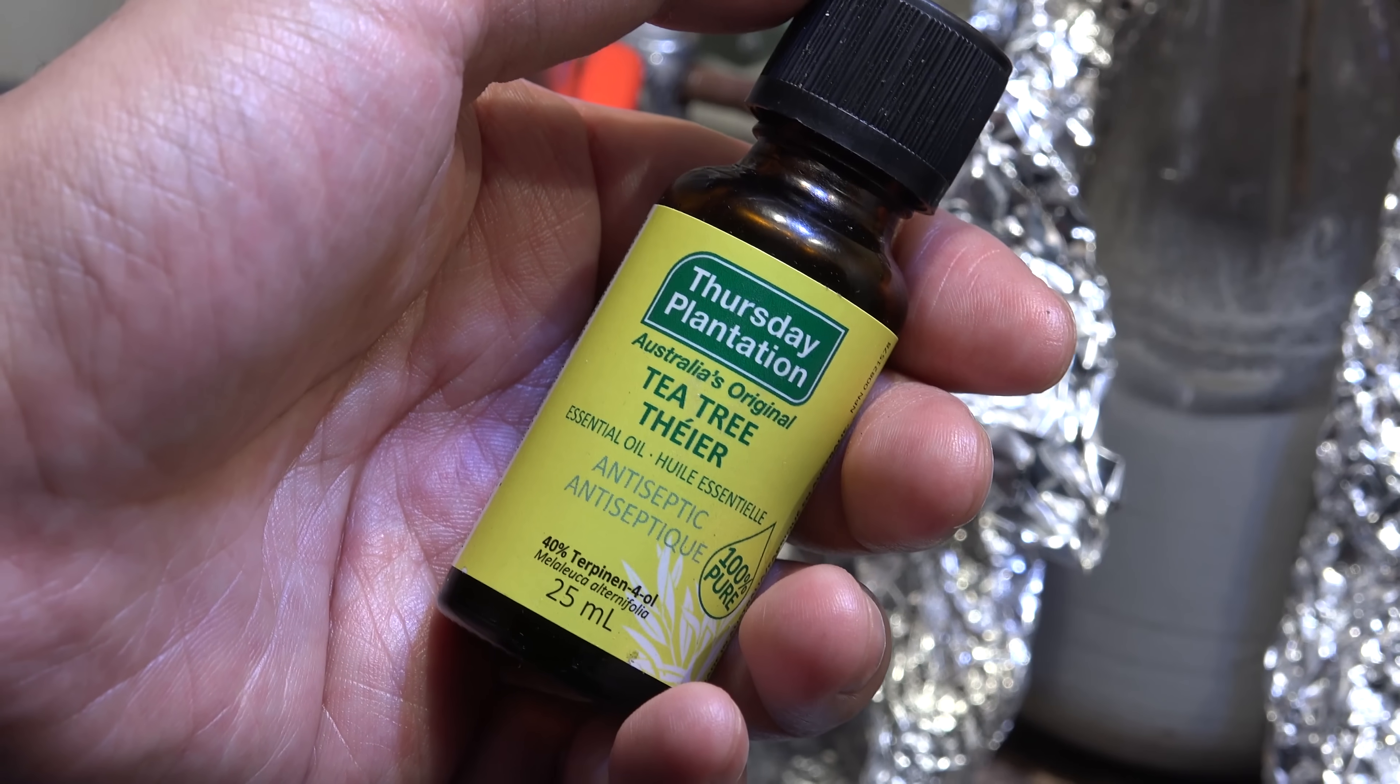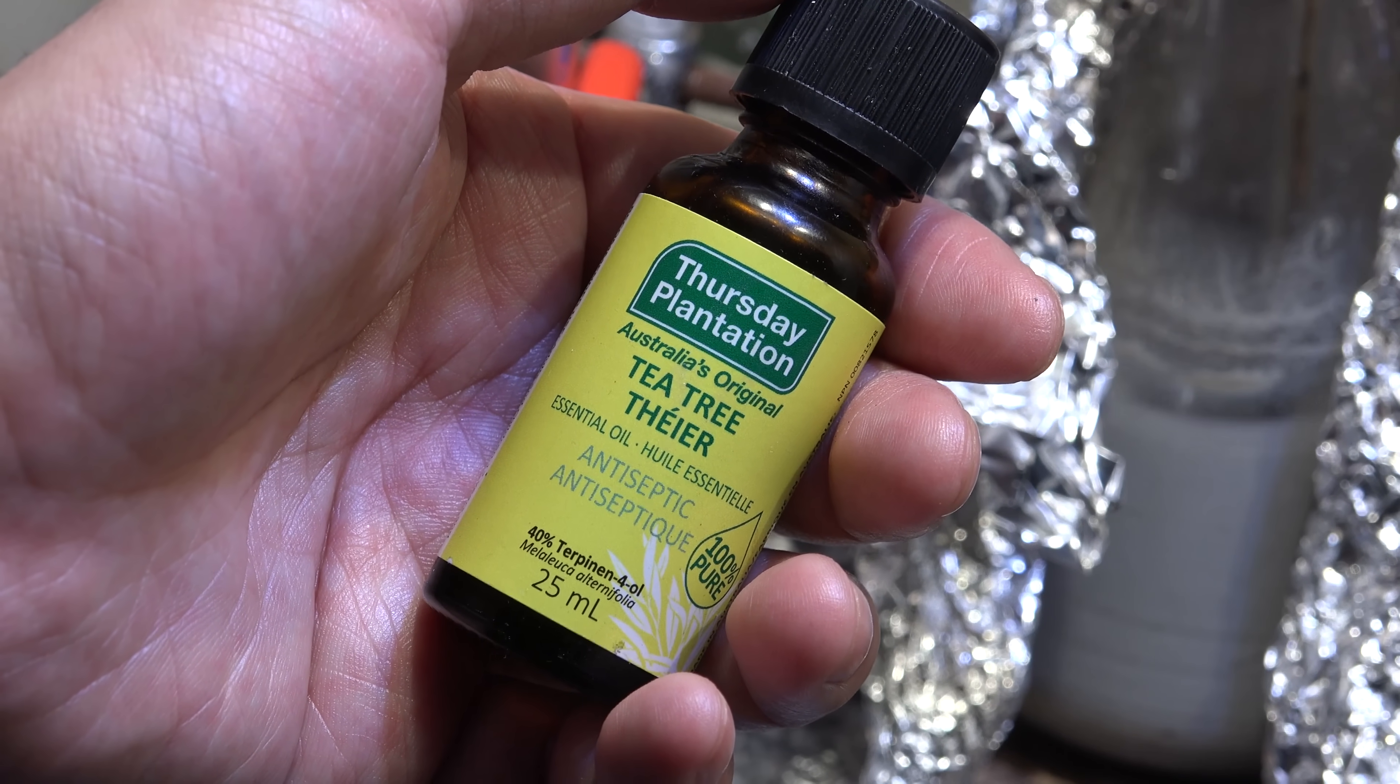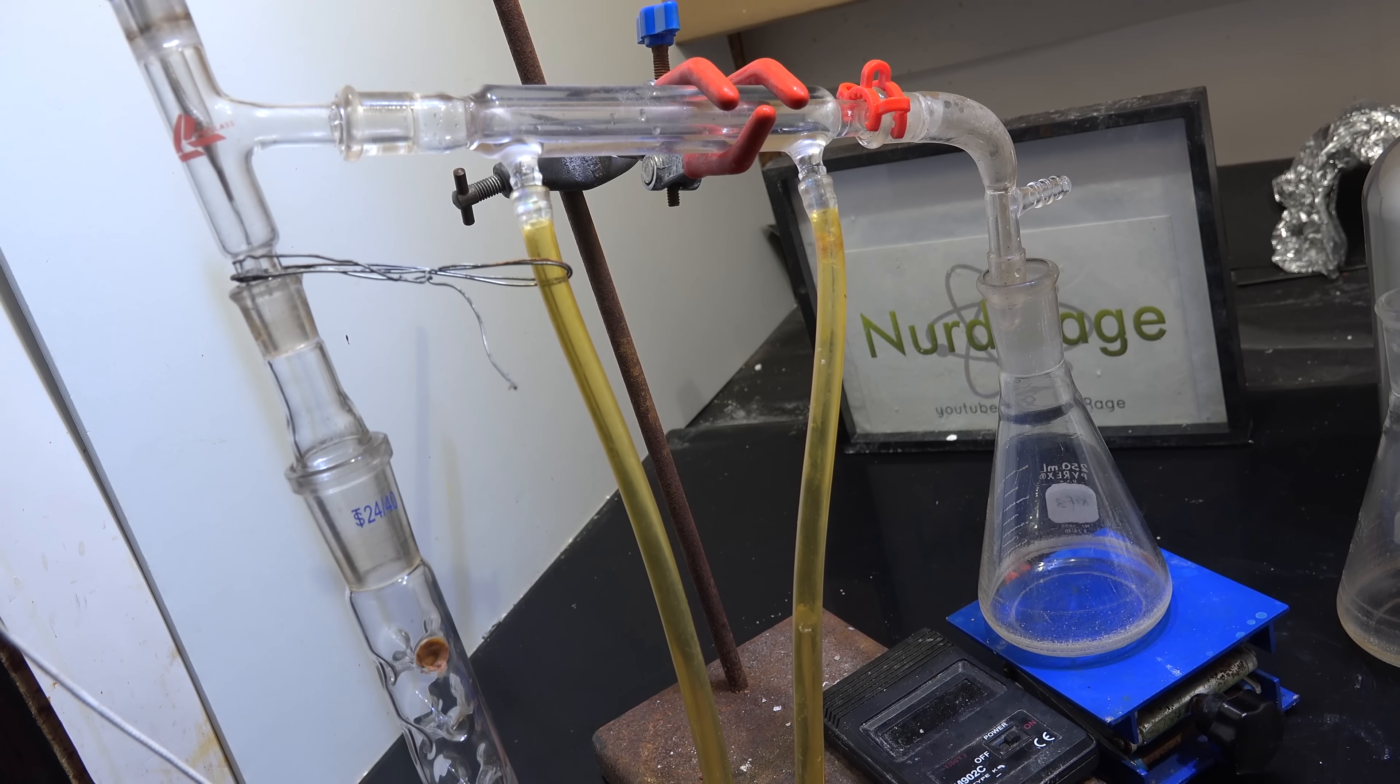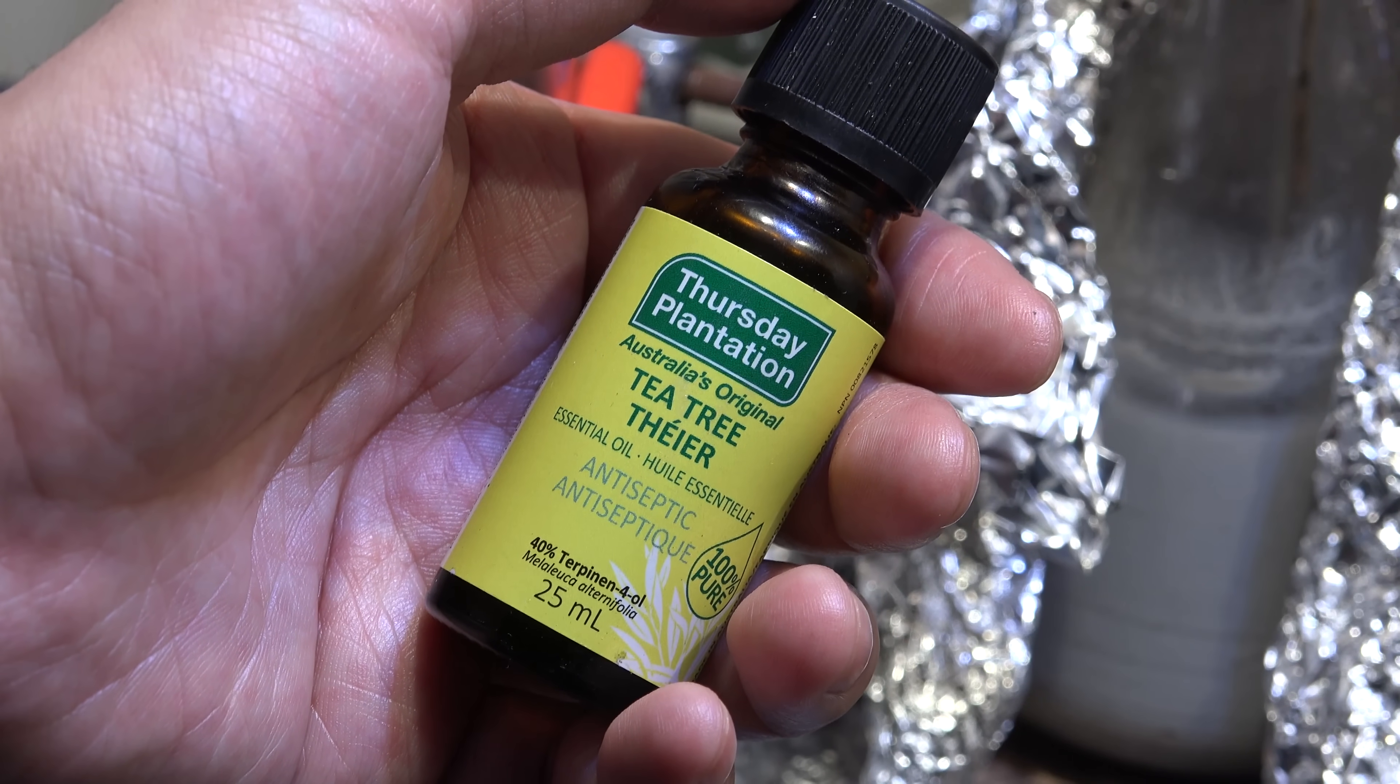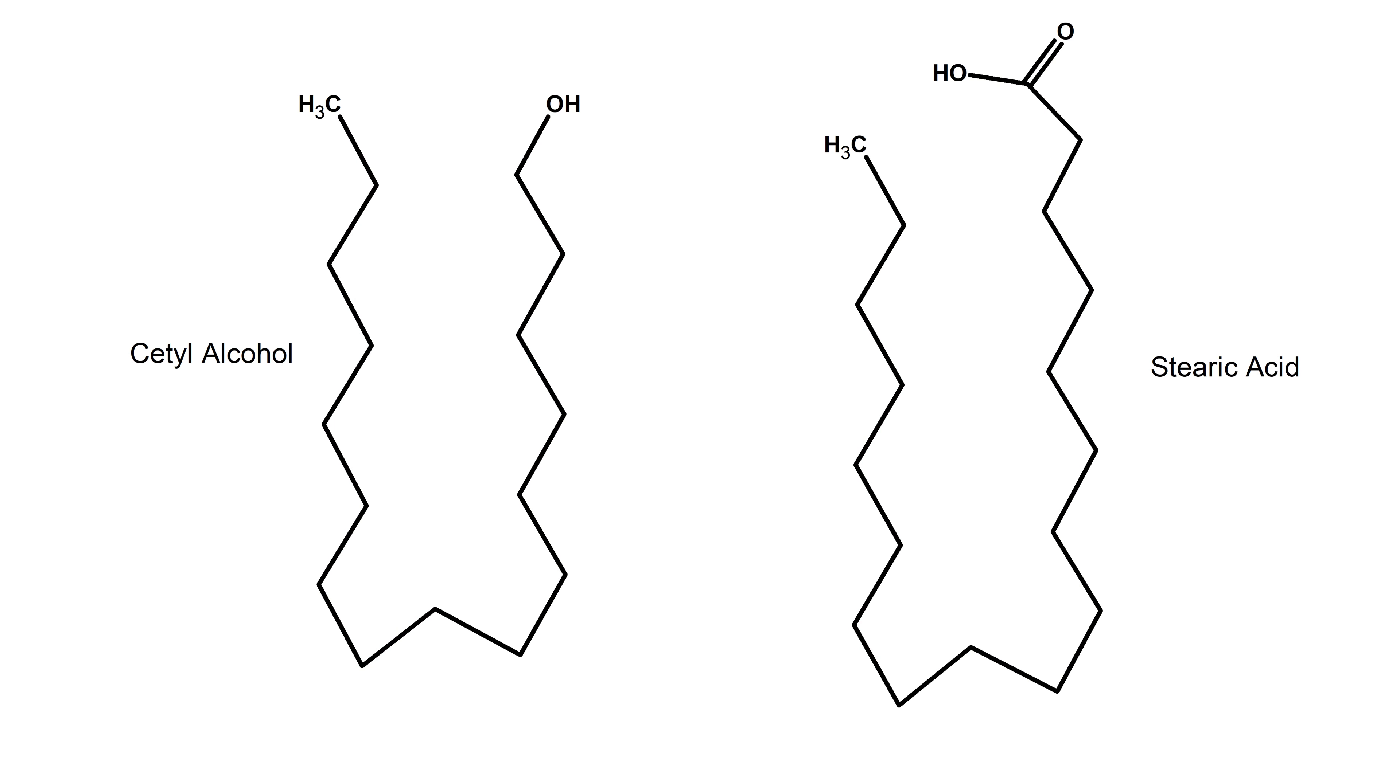While I could do more experiments with just this small bottle, purifications are much easier when you have large quantities to work with. My fractional distillation apparatus has a lot of dead space, so I need at least 100 mL or so of liquid to get a good yield. So I'm going to order one liter of tea tree oil, which is much cheaper to buy in bulk online than at Walmart. I'm also going to order a few more alternative chemicals like cetyl alcohol and stearic acid. Maybe they'll work better than tea tree oil.